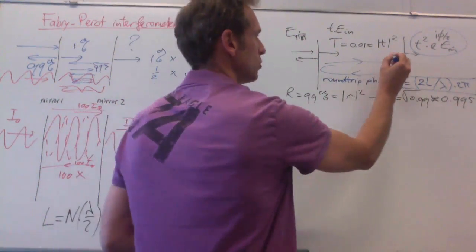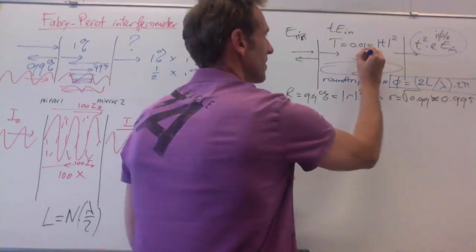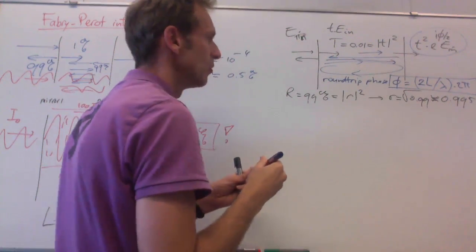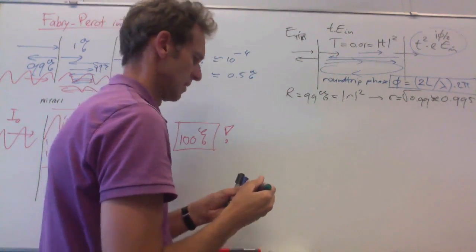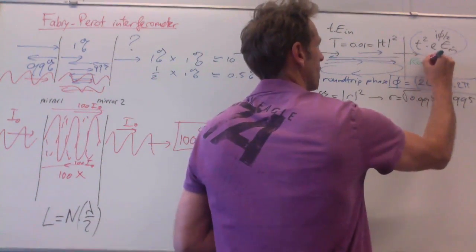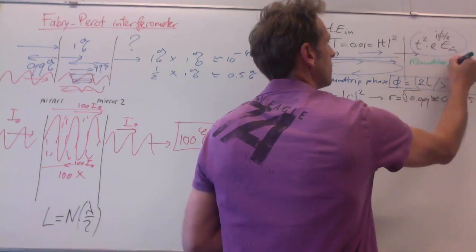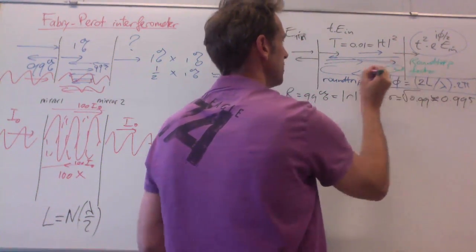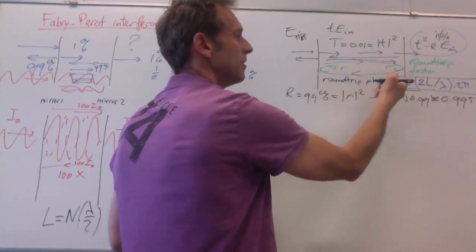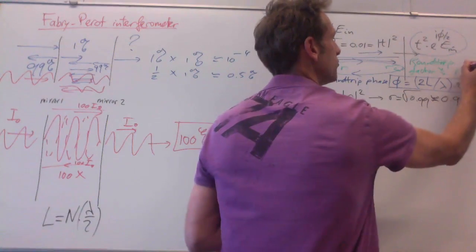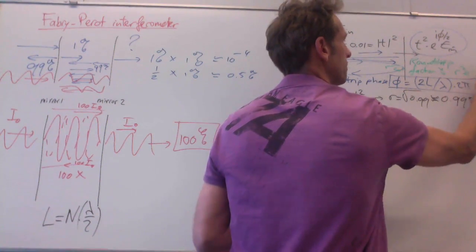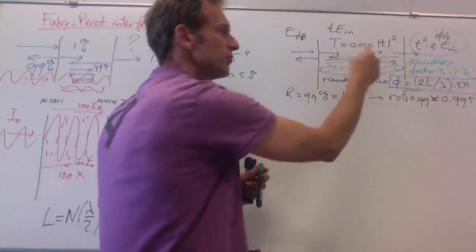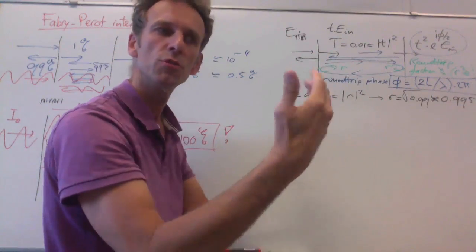So the next trial you get is, you go that way, then you go this way, then you go this way. And on each round-trip, you get an additional factor, which is related to this reflection here, this reflection here, and the round-trip. So in total, you get a factor of r squared e^(iφ).